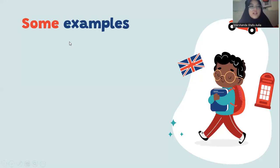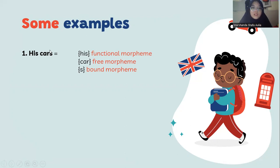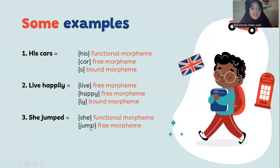Let me give you some examples. First: 'his cars' — 'his' is the functional morpheme, 'car' is the free or lexical morpheme, and '-s' at the end of 'cars' is the bound morpheme. Second: 'live happily' — 'live' is the free morpheme, 'happy' is the free morpheme, and '-ly' is the bound morpheme or suffix. Third: 'she jumped' — 'she' is the functional morpheme, and '-ed' is the bound morpheme.